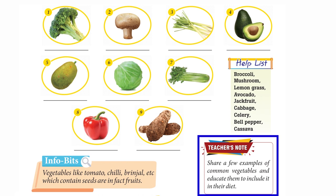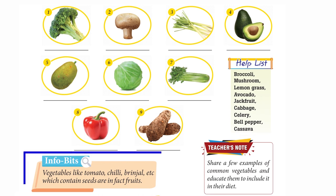Do you know even cucumbers and pumpkins are fruits and not vegetables? Here are some rare but nutritious vegetables — can you name them? Use the help list: broccoli, mushroom, lemon grass, avocado, jackfruit, cabbage, celery, bell pepper, cassava.